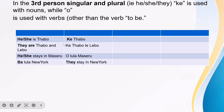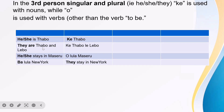So for the third person, if you are referring to he or she, it is "ki." In this case, the person we're talking about — the name is Tabo, which means joy or happiness. "Ki Tabo" means he or she is Tabo. They are Tabo and Lebu — "Ki Tabo Lilebu."